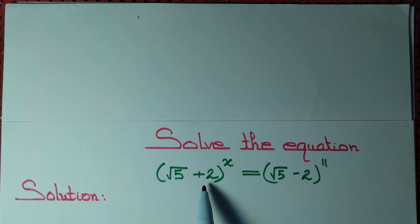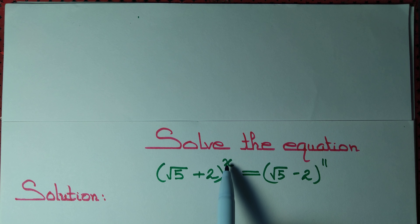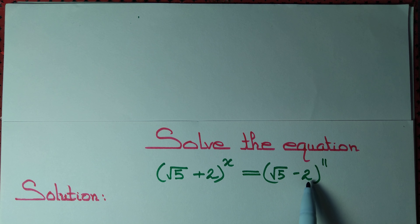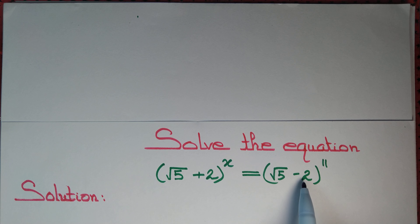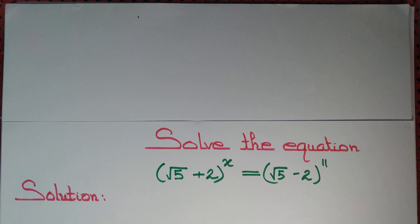Solve the equation: (√5 + 2) to the power x equals (√5 - 2) to the power 11. This is an exponential equation, but we have different bases — the left side has base (√5 + 2) and the right side has base (√5 - 2). Can we get the same base?